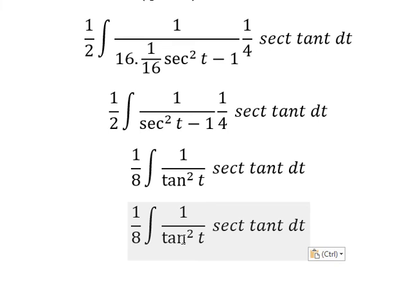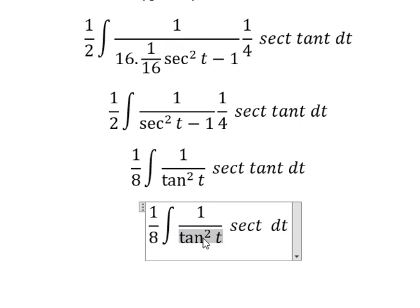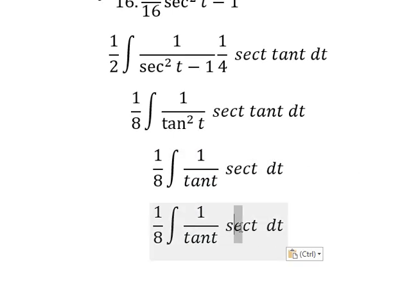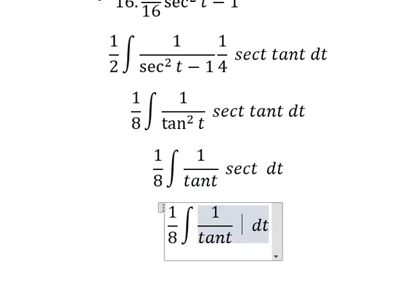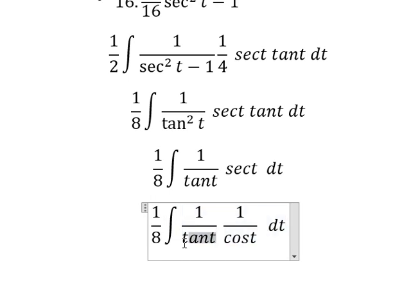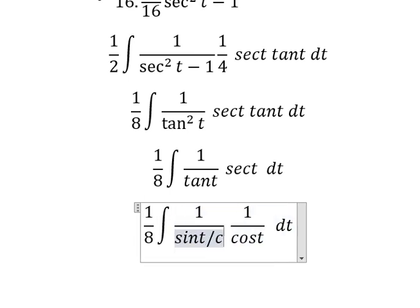Now, we need to simplify tangent t in the numerator and denominator. So secant t, that is 1 over cosine t. Tangent t, that is sine t over cosine t.